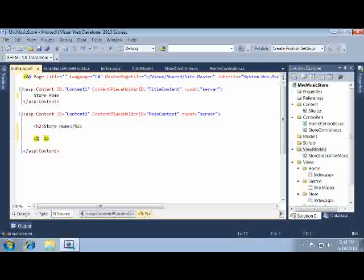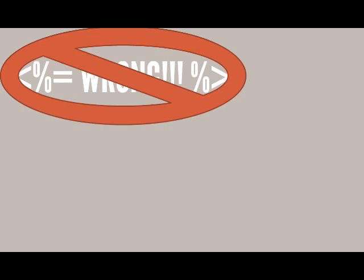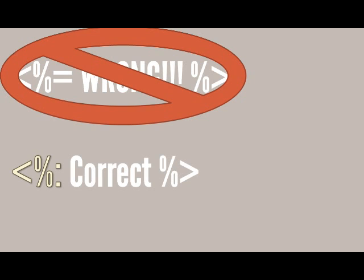There are two main ways you'll see this used. Code within just a less-than percent is executed. Code within less-than percent colon is executed and the results are then output to the page. In previous versions of ASP.NET you may have used percent equals to output values. However that is not correct anymore because it does not HTML encode the values. Instead you should use percent colon to output values, which will ensure that the values are HTML encoded.